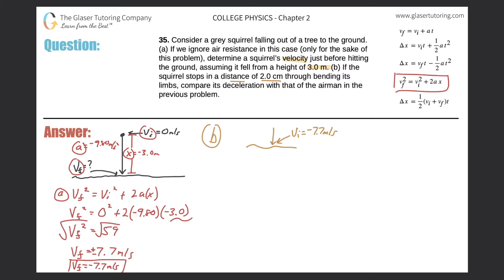Our initial velocity is negative 7.7. When it finally comes to a stop, the final velocity is going to be 0 meters per second. It says that the distance that it covers here by bending its little legs is going to be 2.0 centimeters. It wants us to calculate the deceleration, the acceleration. This should be the positive acceleration, and you'll see how that should work out, because since it's stopping, there must be a force facing upward.